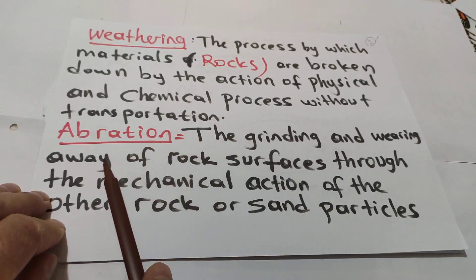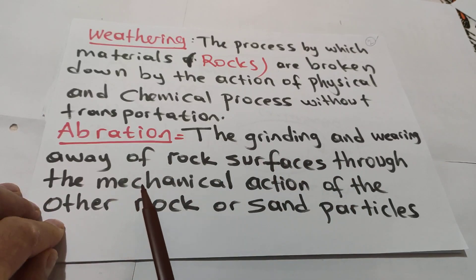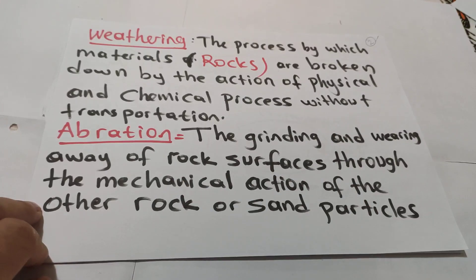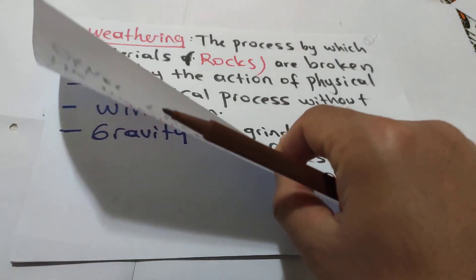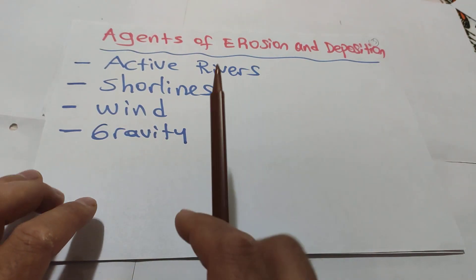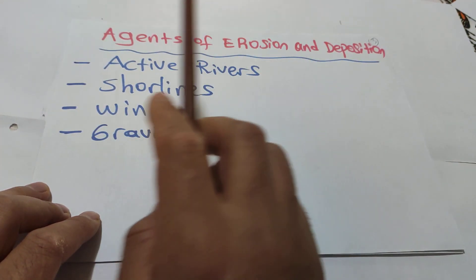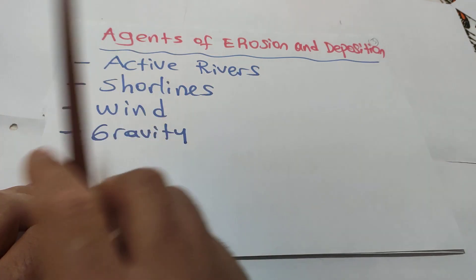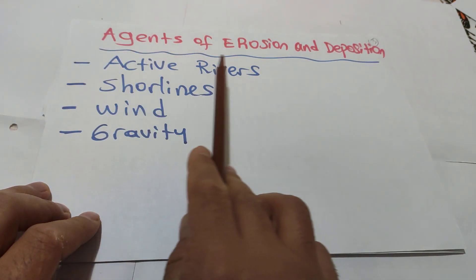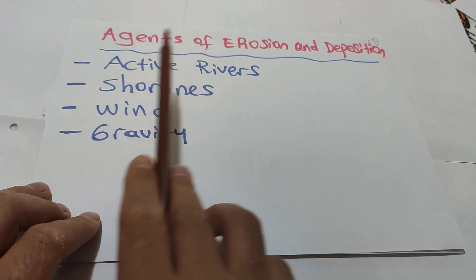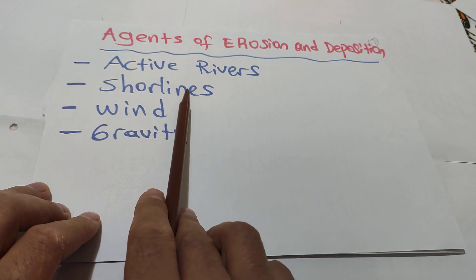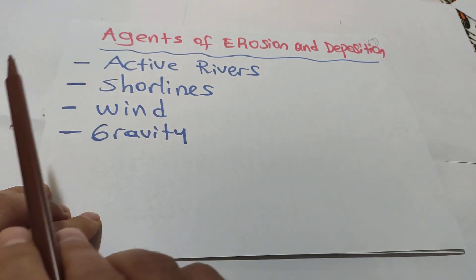Abrasion is the grinding and wearing away of rock surfaces through the mechanical action of other rocks or sand particles. Now for a small revision of section one: the agents of erosion and deposition are active rivers, shoreline, wind, and gravity. Active rivers is section one, shoreline is section two.